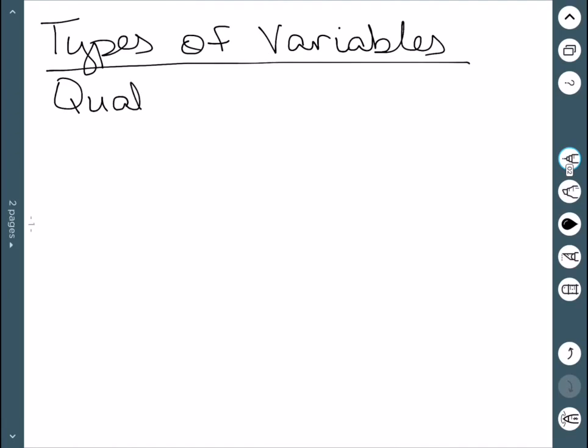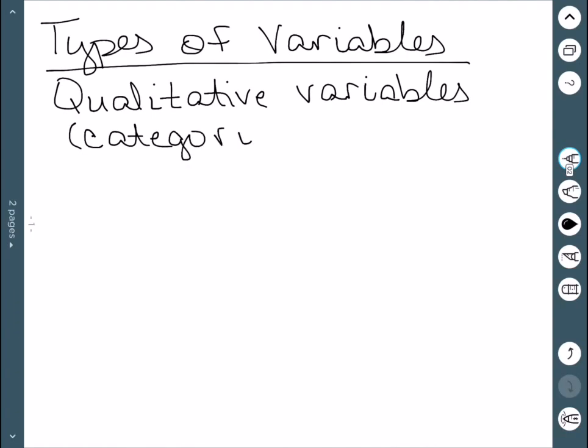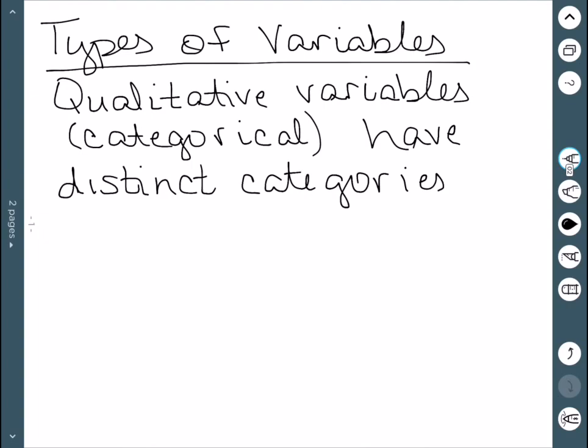We'll start with qualitative. Qualitative variables are also known as categorical variables. And this should give you some idea of what's going to happen here. In particular, these variables have distinct categories according to some kind of characteristic or attribute.